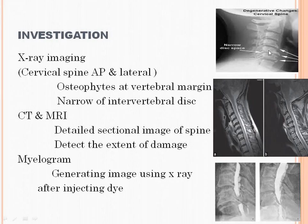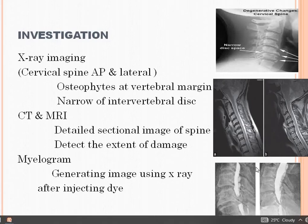CT and MRI are also done to detect the extent of damage. See here — the osteophyte compresses the cervical nerve. CT and MRI help detect compression of the cervical nerve. Myelogram means the X-ray taken after injecting dye — that is also used to visualize the compression.